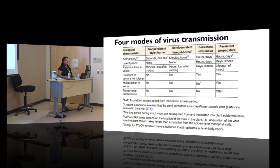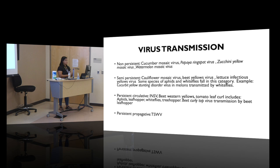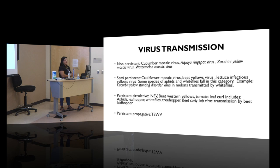Examples by category: non-persistent viruses transmitted by aphids include cucumber mosaic virus, papaya ringspot virus, zucchini mosaic virus, and watermelon mosaic virus. Semi-persistent transmission by aphids and whiteflies includes cauliflower mosaic virus and the cucumber yellowing distorting disorder virus here in Salinas, which is transmitted by whiteflies. Persistent circulative — where INSV falls — also includes beet western yellows and beet curly top virus. Persistent propagative is tomato spotted wilt virus.